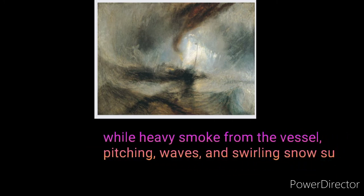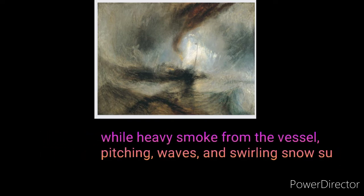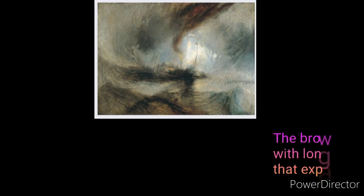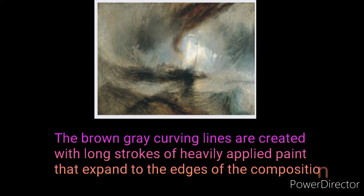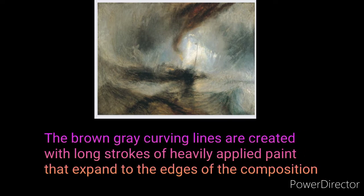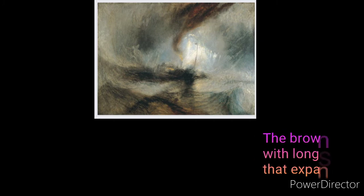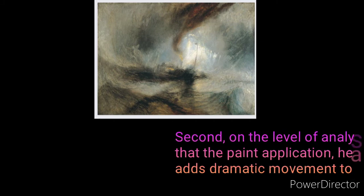Heavy smoke from the vessel, pitching waves, and swirling snow surround it. The brown-gray curving lines are created with long strokes of heavily applied paint that expand to the edges of the composition.